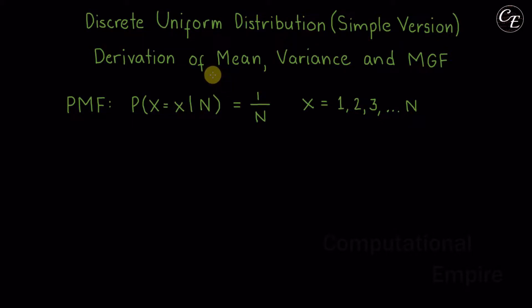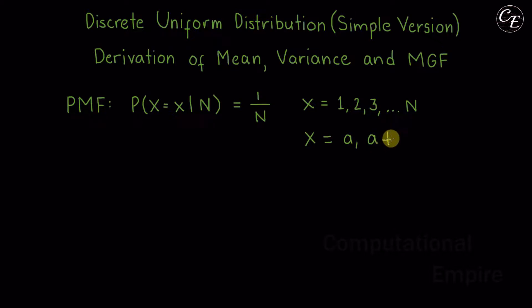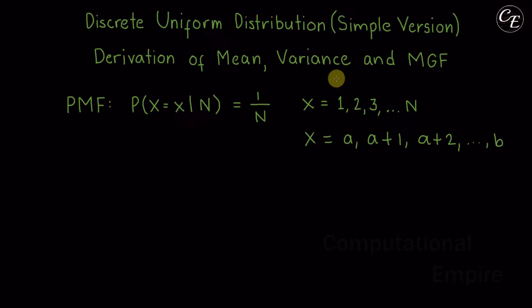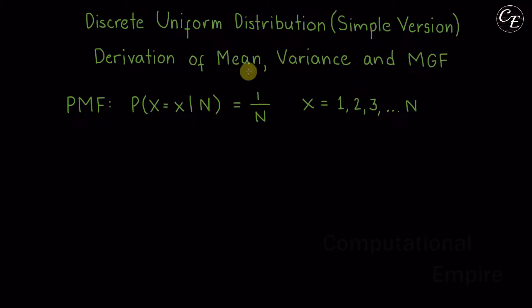Hello everyone. In this video I'm going to show you how to derive the mean, variance, and moment generating function for the discrete uniform distribution. We have the simple version where the value of the random variable is from 1 to n. In the derivations we need to use the probability mass function (PMF) for this distribution, which is 1 over n.